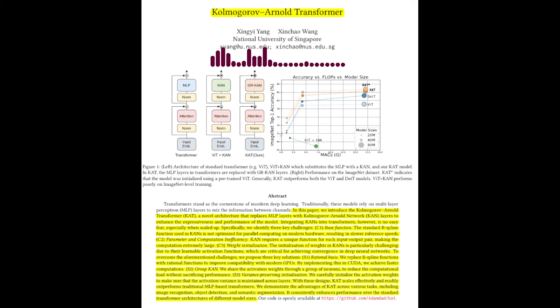For example, they report that KAT-B achieves 82.3% accuracy on ImageNet-1K, surpassing the ViT model of the same size by 3.1%. That's a significant improvement.